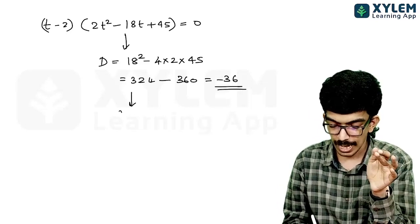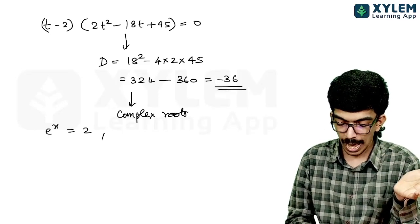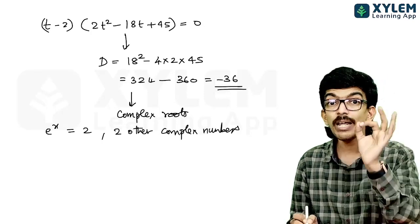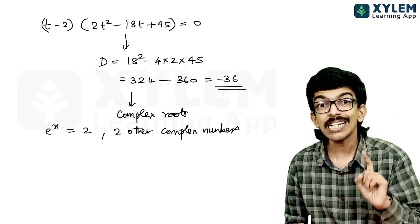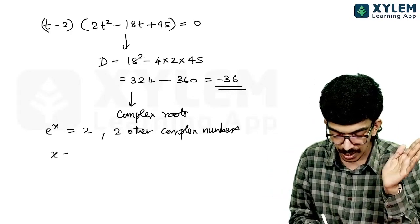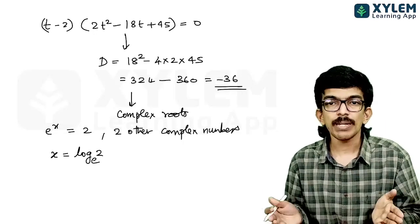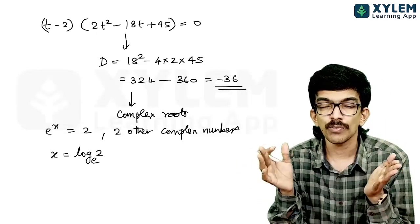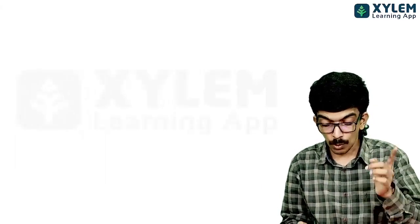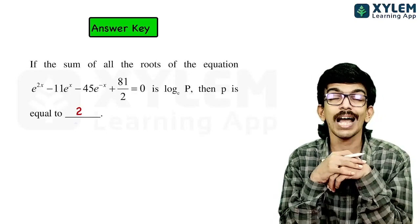The only real value of t (i.e., e^x) is t = 2. The other two t-values are complex numbers, which do not yield real x values. Therefore, the only real solution is x = ln 2. The sum of all real roots is simply log 2, so the required answer is p = 2.